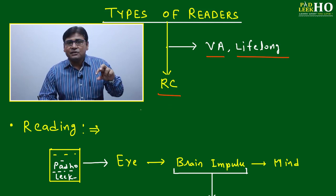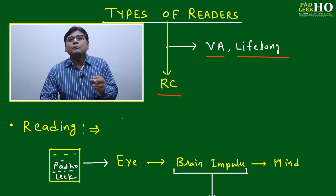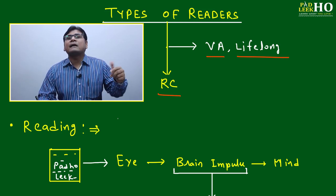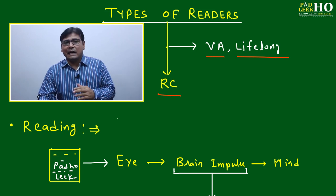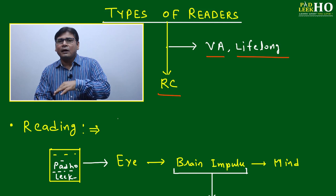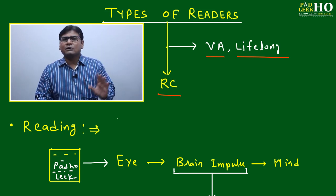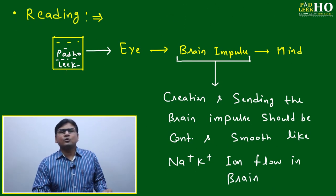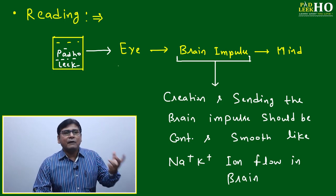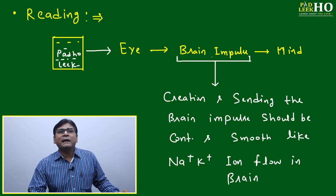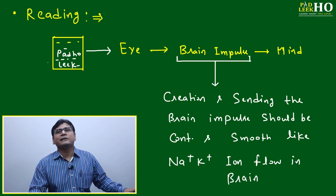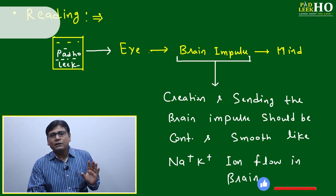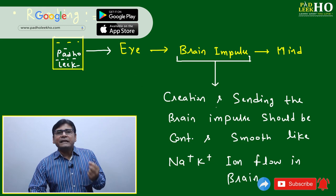Let's understand the reading process in terms of biology or perception. Reading is simple: just vision, and after vision you send a brain impulse to the brain, which then understands what is written. You can correlate with this: one written page is there, you visualize it, that visualization creates a brain impulse, which leads to the mind, and the mind understands. It is only a two-step process — look, then send the brain impulse.